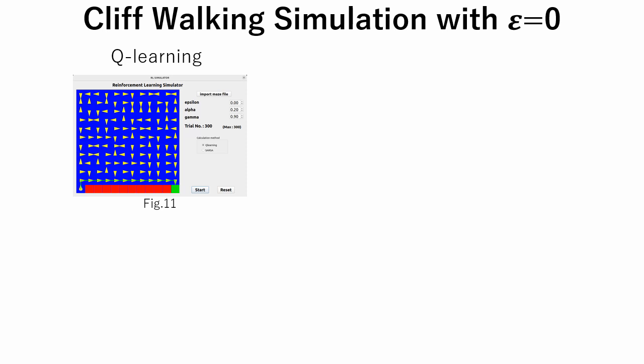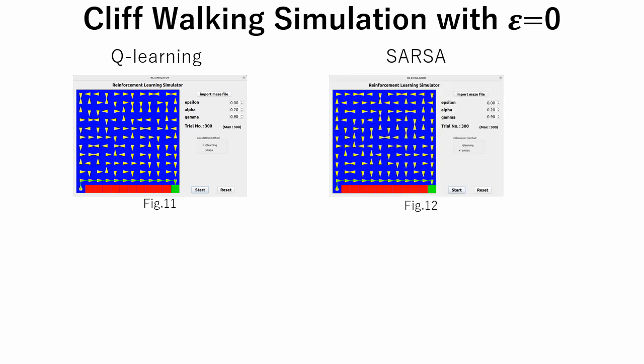Next, we perform the cliff task simulation with epsilon equal to 0. As shown in figures 11 and 12, both Q-learning and SARSA succeeded in obtaining the shortest path from start to goal cells.